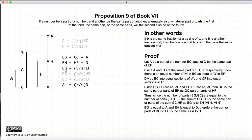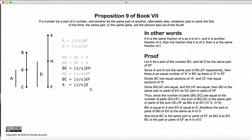So BG is some parts of EH. Now A is equal to BG, and D is equal to EH. So by the equality, A must be the same parts of D that BG is of EH. And since BG is the same number of parts of EH that BC is of EF, it therefore stands that A is the same number of parts of D that BC is of EF.